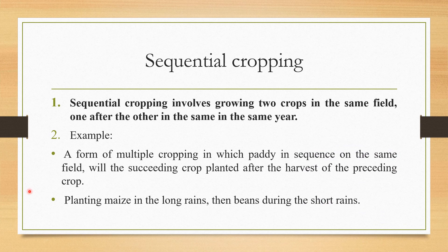Coming to sequential cropping, this means growing two or more crops in the same field one after the other in the same year. For example, after harvesting paddy, another crop succeeds it. A further example is planting maize in the long rains and, after the maize, growing beans during the short rains.